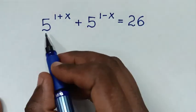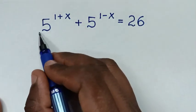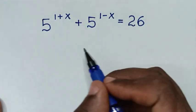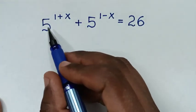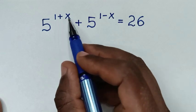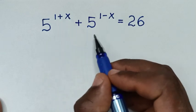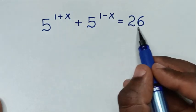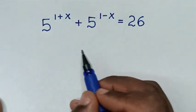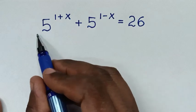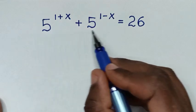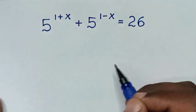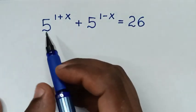Hello, you are welcome to solve this math problem, which is 5 power (1 plus x) plus 5 power (1 minus x) is equal to 26. We need to find the values of x from this equation.